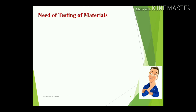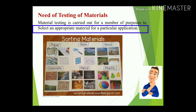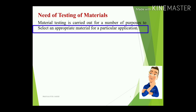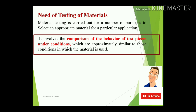Material testing is carried out for a number of purposes. The primary purpose is to select an appropriate material for a particular application. In engineering, each application requires different kinds of materials, such as ferrous, non-ferrous, or ceramics. Testing is essential to confirm whether a material is suitable for a given application, enhancing performance by comparing the behavior of test pieces under conditions similar to actual use.